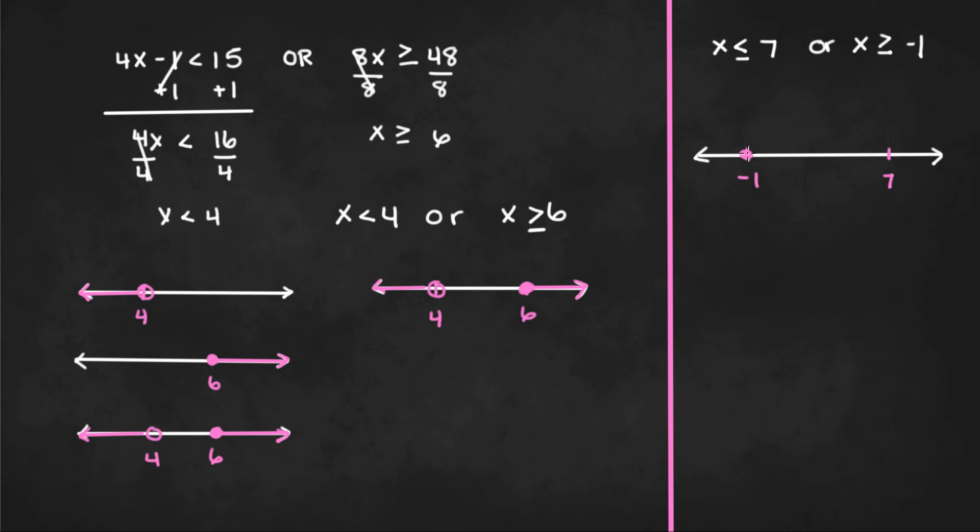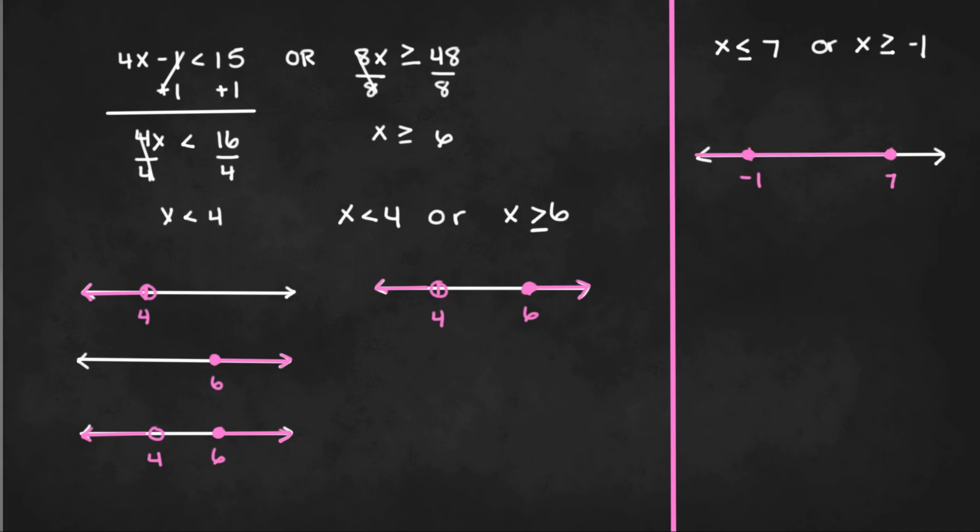And since both of them are either less than or equal to or greater than or equal to, we have closed dots at negative 1 and at 7. Now x is less than or equal to 7, which means we're going to graph a line moving to the direction in the left. And since x is greater than or equal to negative 1, we will plot a line moving to the right from the point negative 1. And the graph looks something like this.